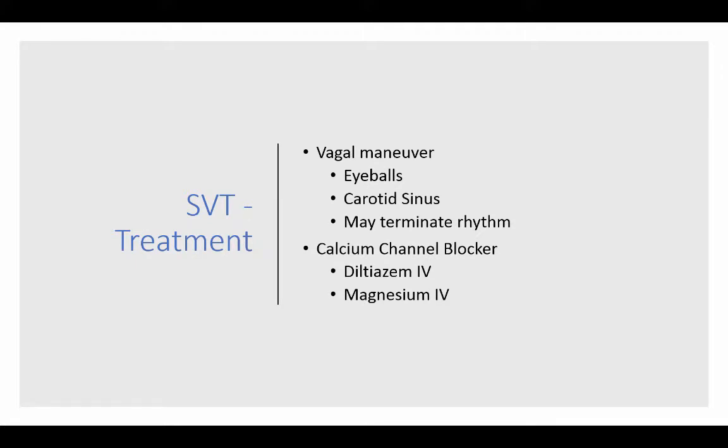We can try a vagal maneuver — pressure on the eyeballs or the carotid sinus — which can sometimes terminate the rhythm, but generally treatment is with calcium channel blockers. Our first choice is diltiazem, which will slow conduction through the AV node and often decrease the ventricular response rate enough to improve perfusion. It's important to remember that magnesium is a natural calcium channel blocker, and if you do not have diltiazem, magnesium can often be used very successfully.